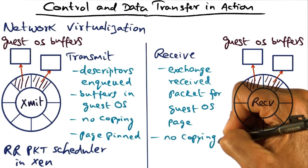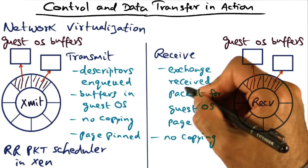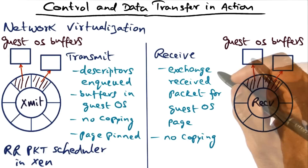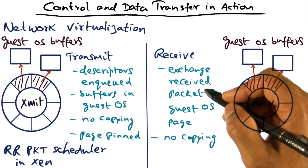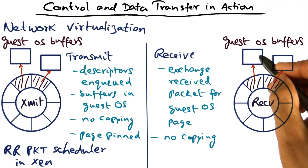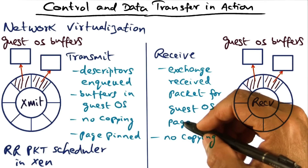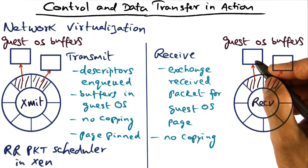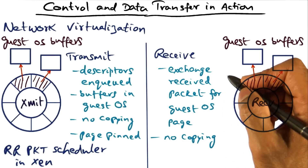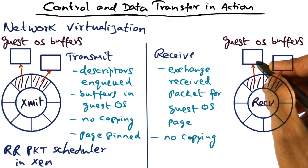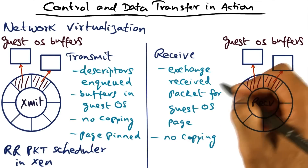We can avoid copying in the direction of going from Xen to the guest operating system. One technique Xen uses is that when it receives a packet into a machine page, it can simply exchange that machine page with some other page that belongs to the guest operating system. Either the guest can pre-allocate a buffer, in which case Xen can directly put the packet into the pre-allocated buffer, or if Xen receives a packet into a machine page, it can simply swap that machine page for a page the guest already owns. Those are two different techniques for avoiding copying altogether in the reverse direction as well.